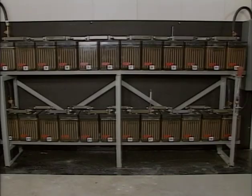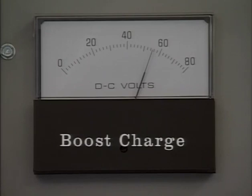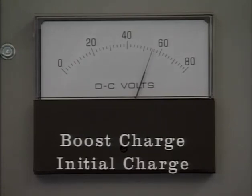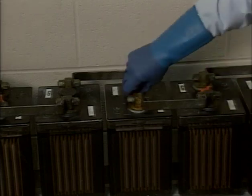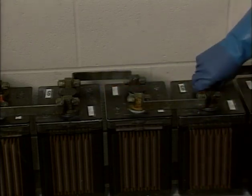As the cells discharge, sulfation occurs. The resulting sulfate crystals can be difficult to remove with normal charging and can prevent the cells from taking a full charge. For this reason, a freshening charge — a higher-than-normal charge voltage — is typically applied to wet-charged cells before they're put into service to ensure that the crystals are driven off the plates and the cells are fully recharged. A freshening charge is also sometimes referred to as a boost charge or an initial charge. Before it is applied, the cells must be properly installed and the shipping vent plugs are typically replaced with flame arresters.